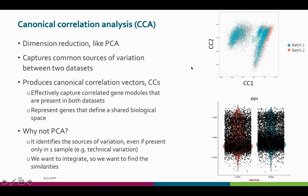Canonical correlation analysis, or CCA, is yet another dimension reduction method, like PCA. But unlike in PCA, we are not trying to find the directions where there is most variance in the data, but rather capture the common sources of variation between the datasets. Instead of principal component vectors, we get canonical correlation vectors as a result. These vectors represent the genes that best define the shared biological space between the samples.